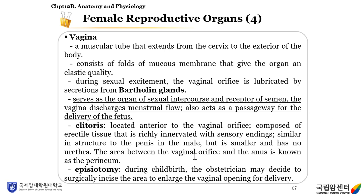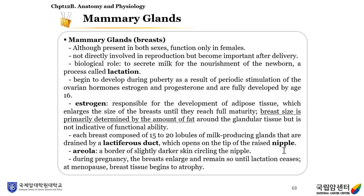During sexual excitement, the vaginal orifice is lubricated by secretions from Bartholin's glands. The vagina serves as the organ of sexual intercourse and receptor of semen, discharges menstrual flow, and acts as a passageway for delivery of the fetus. The clitoris is located anterior to the vaginal orifice, composed of erectile tissue richly innervated with sensory endings, and similar in structure to the penis but smaller and without a urethra. The area between the vaginal orifice and the anus is known as the perineum. During childbirth, the obstetrician may surgically incise this area to enlarge the vaginal opening, a procedure called episiotomy.